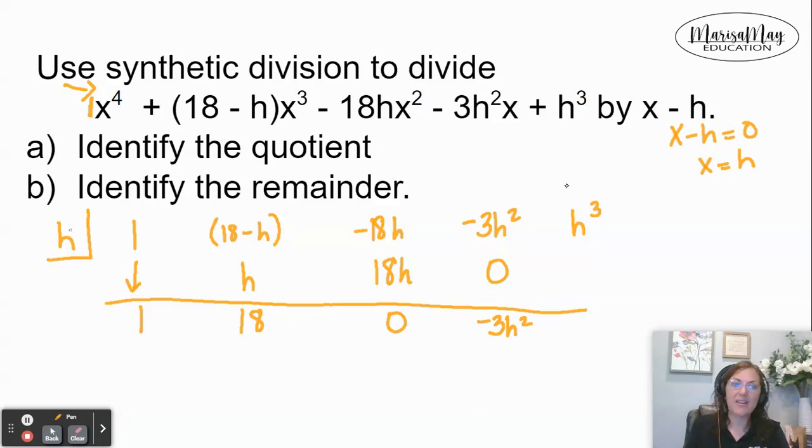Now we multiply. h times negative 3h to the second is negative 3h to the third. And we add. 1h to the third plus negative 3h to the third gives me negative 2h to the third.